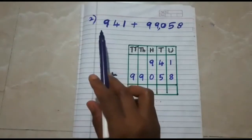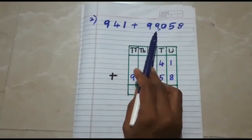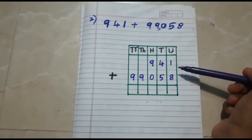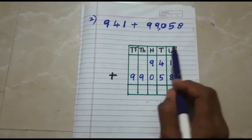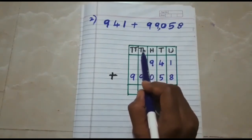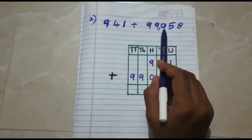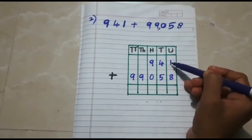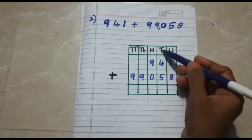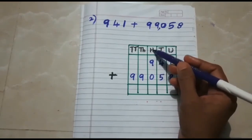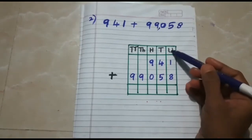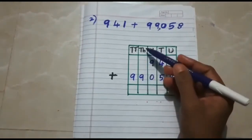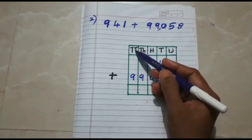Next one is 941 plus 99,058. You have to draw columns for the place values: units, tens, hundreds, thousands, and ten-thousands — because here we have 99,058. The place value of 1 is units, 4 is tens, 9 is hundreds for 941. For 99,058: 8 is units, 5 is tens, 0 is hundreds, 9 is thousands, and 9 is ten-thousands.